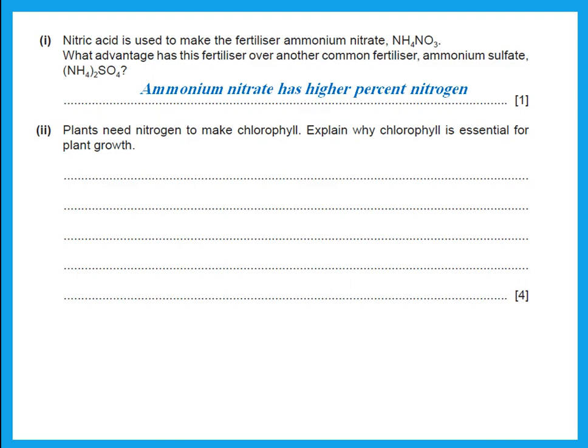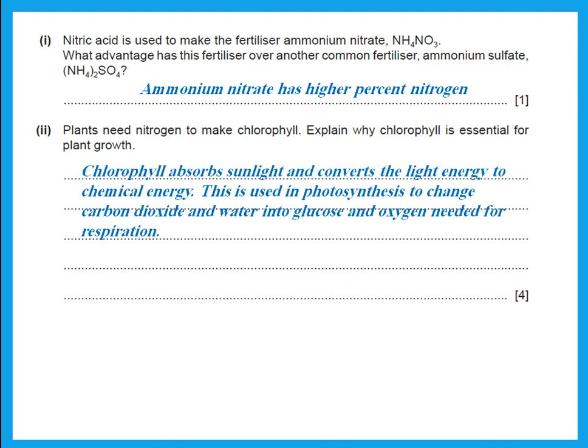Plants need nitrogen to make chlorophyll. Explain why chlorophyll is essential in plant growth. Chlorophyll is needed for photosynthesis. Chlorophyll absorbs sunlight and converts light energy to chemical energy. This is used in photosynthesis to change carbon dioxide and water into glucose and oxygen needed for respiration.